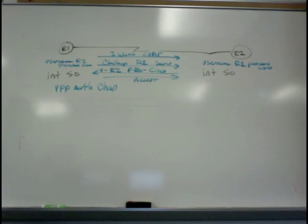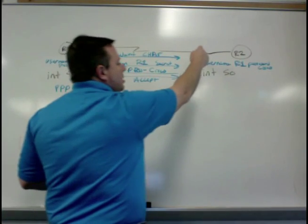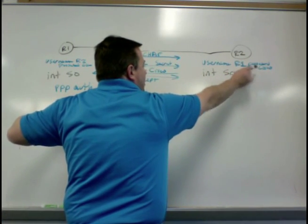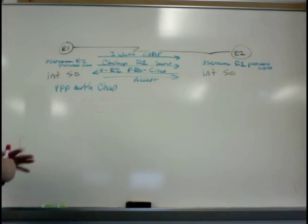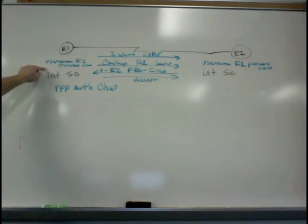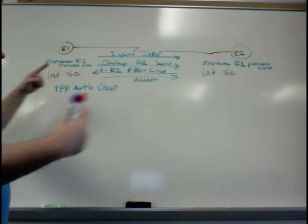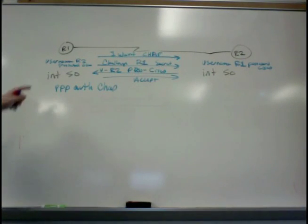So in order to make CHAP work, you need one side that's forcing CHAP. So it says, I want CHAP. This side gets the username from the challenge. So you need a username R1 with the opposite side's router name, password Cisco. So it takes its own router name with that password, sends it back. So that means on this side, you need a username command with the name from the other side that matches the password. So you need username commands that reference opposite names, but the passwords have to match.